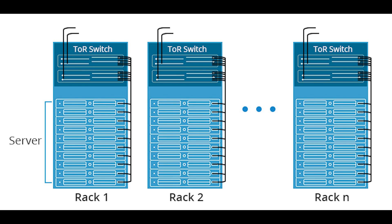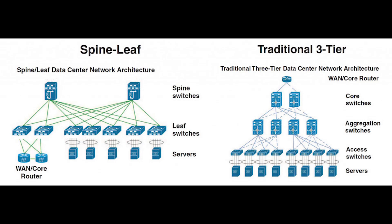The main difference between spine-leaf architecture and three-tier architecture is the number of network layers and the traffic they handle. The traditional three-tier network has core, aggregation, and access layers, and is usually designed for north-south traffic using STP protocol, supporting up to 100 switches. In case of continuous network data expansion, this results in port blockage and limited scalability. Spine-leaf architecture adds east-west traffic parallel to the north-south network architecture of the backbone, which solves the bottleneck problem of the traditional three-tier architecture.